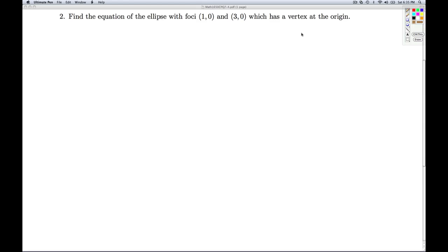Alright, number 2, we're asked to find the equation of an ellipse with foci at (1, 0) and (3, 0) and a vertex at the origin. So it's always best, when in doubt, graph these out.